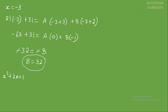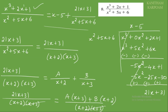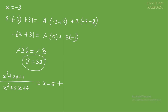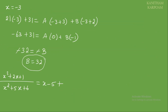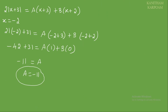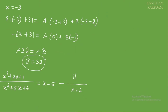So x cubed plus 2x plus 1 by x squared plus 5x plus 6 equals x minus 5 plus the partial fractions: minus 11 by x plus 2 plus 32 by x plus 3.